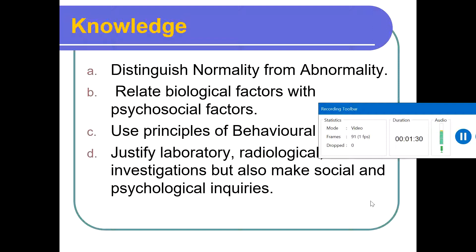For knowledge, you have to distinguish between normality and abnormality. The knowledge you gain in your five years will help you to determine whether a patient is suffering from a disease or not. You need to relate biological factors with psychosocial factors — explaining disease etiology in both biological and psychosocial terms. Use the principles of behavioral sciences, which deal with biological, psychological, and social circumstances of the patient. As a holistic physician, use all three tools while treating your patient.